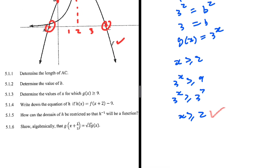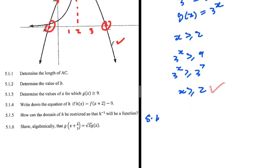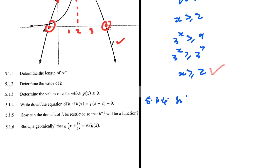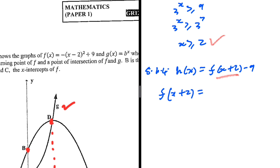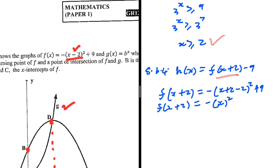5.1.4: write down the equation of h if h of x equals f of x plus 2 minus 9. Let's do one operation at a time. For f of x plus 2, in place of x we substitute x plus 2 into f of x. So we get minus (x plus 2 minus 2) squared plus 9, which equals minus x squared plus 9.